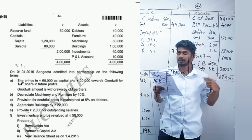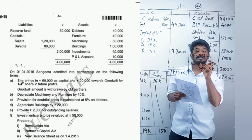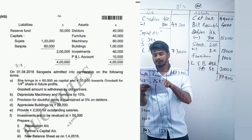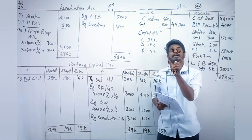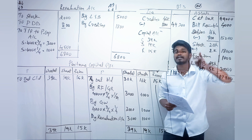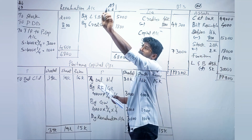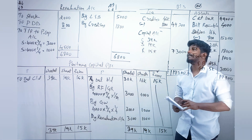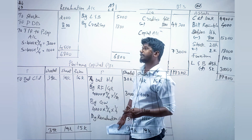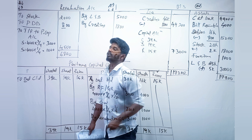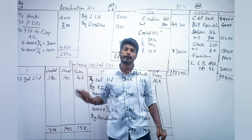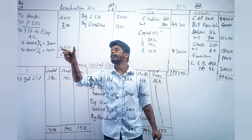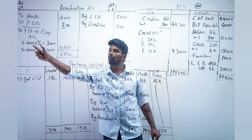Next, investments are to be revalued at 50,000. The value of investments in the balance sheet is 40,000, and we are revaluing at 50,000 — which means 10,000 is increasing. Since the asset is increasing, we record it on the credit side: investments 10,000. Now total the credit side, put the same value on the debit side, and the balance is shared to old partners in the old ratio. Your revaluation account is ready.